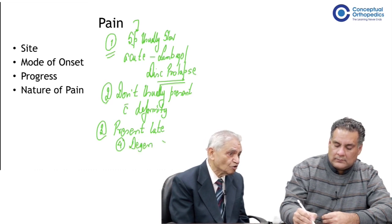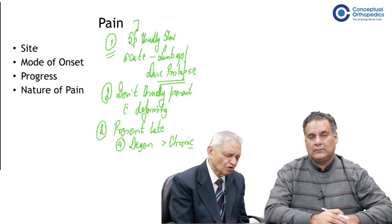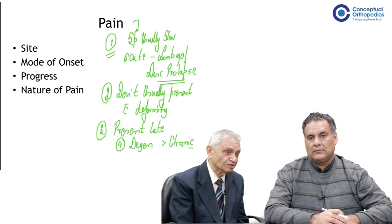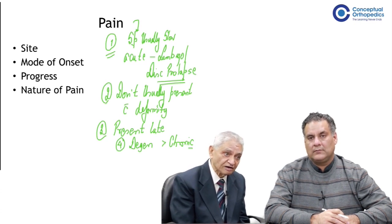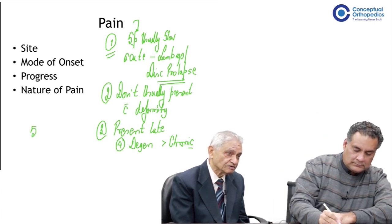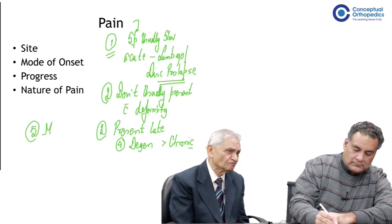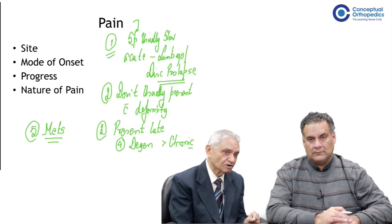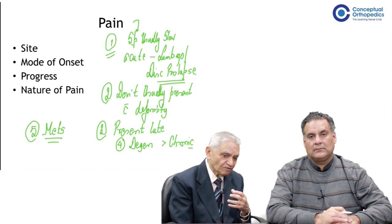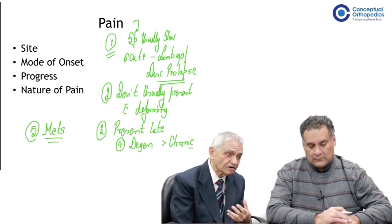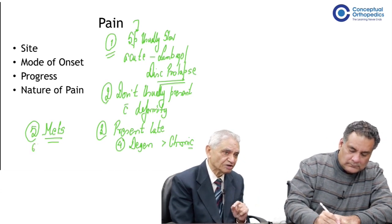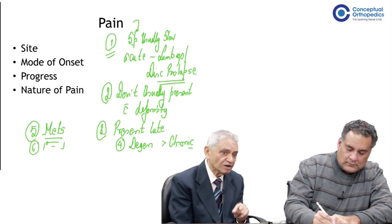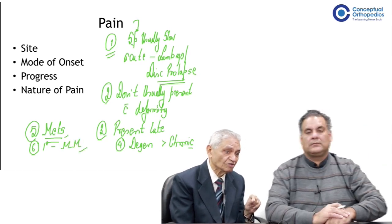Pain caused by a neoplastic deposit should be kept in mind. The commonest malignant disease of the vertebral column is probably a secondary deposit, which generally occurs after the age of 50 or 55 years. The commonest primary malignant tumor of the vertebral column is myeloma.